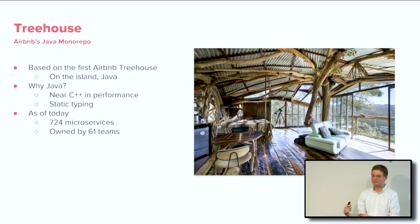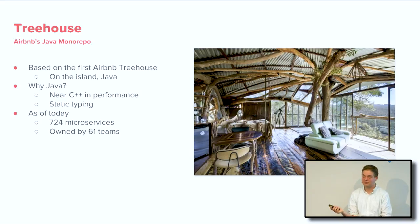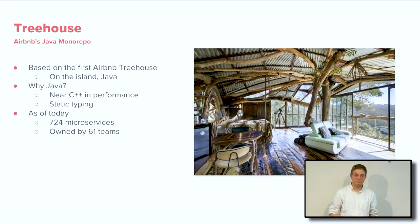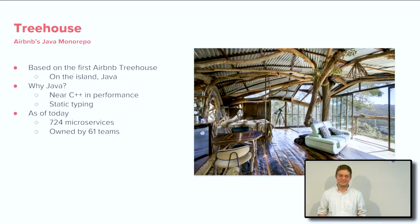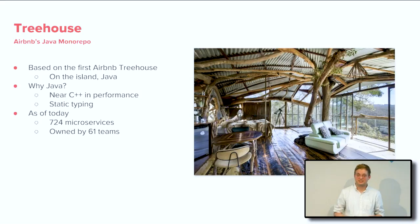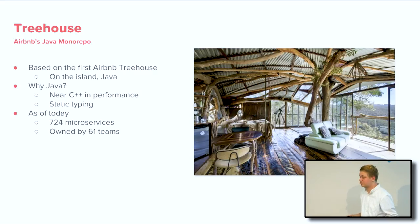Why did we choose Java? The JVM has been through decades of optimization and is near C++ in performance. We also love Java for static typing. As much as we love Ruby, calling a method and passing in wrong parameters and breaking something two weeks later is just not great. We catch those things now with static typing in Java. As of today we have 724 microservices in Treehouse, owned by 61 different teams. We really want these services to be micro — do small things.